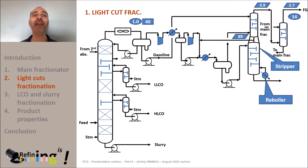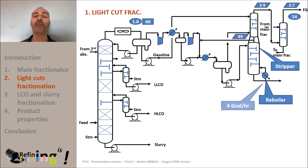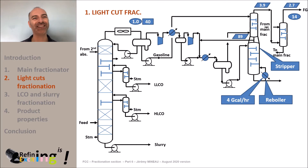If we bring too much energy within the reboiler we will route C3 and therefore propylene into the overhead gas. But reversely, if the heat input is too low there will still be fuel gas molecules in the LPG stream, and this is not what we want. So there is an optimum, and in our case an energy amount of about 4 giga calories per hour is adequate to meet both objectives.